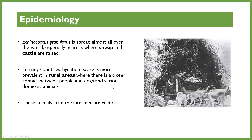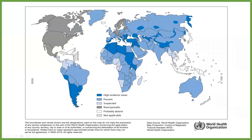In terms of distribution, this is normally found where we have herders keeping sheep or cattle, and it will be more prevalent in rural areas than urban areas. Sheep and cattle act as the intermediate host. According to the World Health Organization, the majority of cases are in Africa, some parts of South America, and Asia, with very few cases in North America and parts of Europe. Northern Africa and Kenya and East Africa have a very high prevalence of this condition.